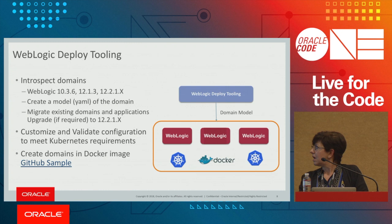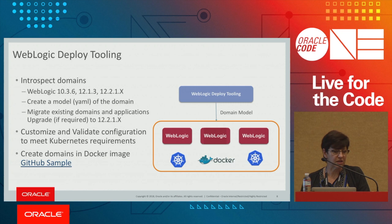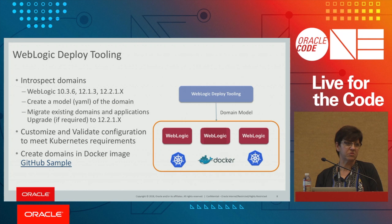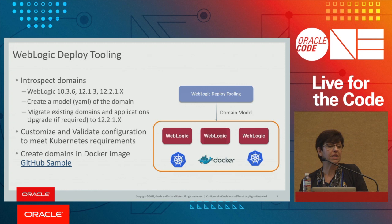The tool also performs validation because certain configurations — like node manager or server migration — are not supported in Kubernetes. Validation ensures you won't have problems when you instantiate or deploy the WebLogic domain. A sample in the Docker GitHub project shows how to create a WebLogic domain using the deploy tooling inside a Docker container.